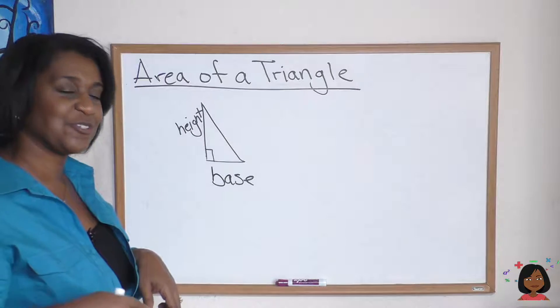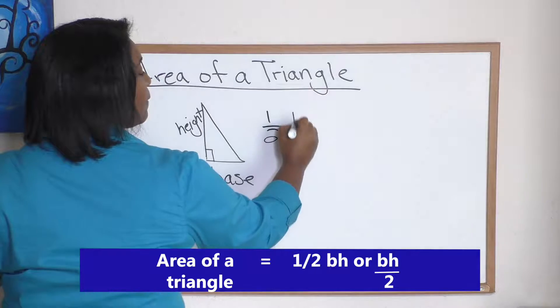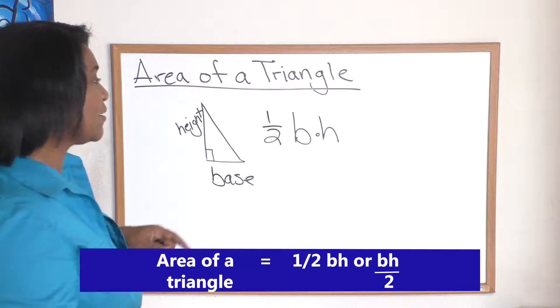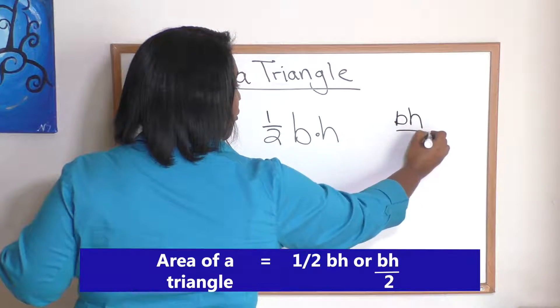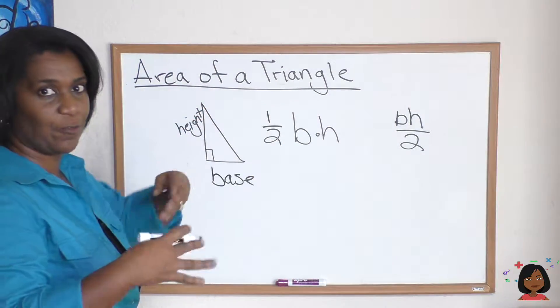Now here's your formula: one half base times height, or another way to say it is base times height over two, because one half times base times height is really base times height over two.